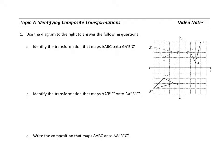This video will cover identifying composite transformations, meaning we're given a graph with triangle ABC, then it's mapped onto triangle A prime B prime C prime, and from there it's mapped onto the double prime triangle. We're asked to identify first the transformation that maps ABC onto the primes.